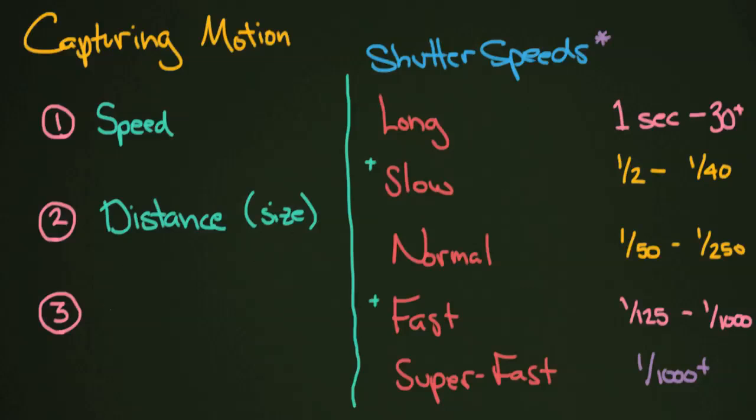And the last question that you want to ask yourself, number three, is how much motion do you want to convey? So how much do you want it to blur is basically the question that you want to ask. How much do you want that person to be or that object to be completely sort of blurred out or do you want them to be just a little bit there? That's something you need to know. And that also will determine which one of these shutter speeds you select. Let's take a couple examples now.